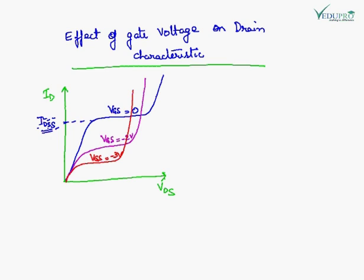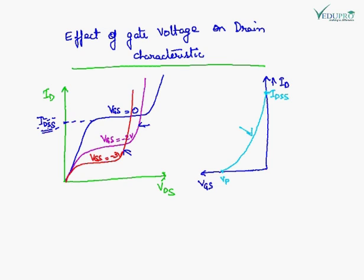Just as we increase the gate voltage, because we have to reverse bias the gate, the gate should always be negative. So when we increase the magnitude of VGS from 0 to minus 2V, if we plot the graph between VGS and ID, we will see that the maximum current is IDSS when VGS is 0.